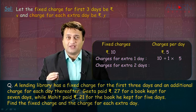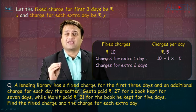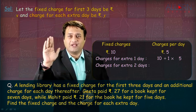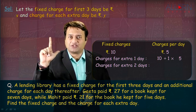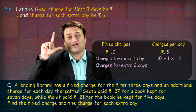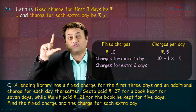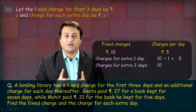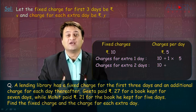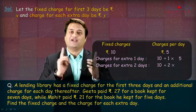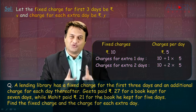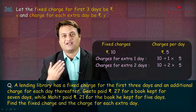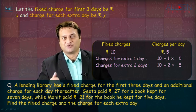Similarly, if a book is kept for 5 days, 3 days will be the fixed charge, so the extra charges will be only for 2 days. Charges for extra 2 days will be 10 plus 2 into 5 — that is 2 days into charge per day Rs. 5 — so that is 10 plus 10, that is Rs. 20.